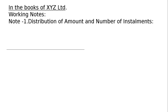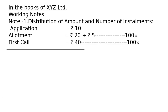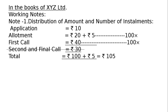Working notes. Note 1: distribution of amount and number of installments. Application Rs.10, allotment Rs.20 for capital and Rs.5 for premium, first call Rs.40. Second and final call has not been made: Rs.30 — cross that out. Total is 100 plus 5, that is Rs.105.